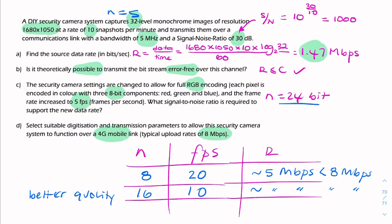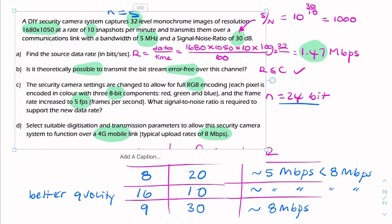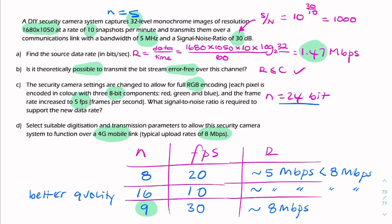Now if you really want to push your quality up to the limit where you want something as close as possible to 8 megabits per second, what you could do is have 9 bits and 30 frames per second. 30 frames per second is good enough to watch as a video, so 30 frames per second is really high quality for a security camera, that's more than adequate. And 9 bits per second is 512 grey levels, again more than adequate for a security camera application. So this will probably give you the best quality.